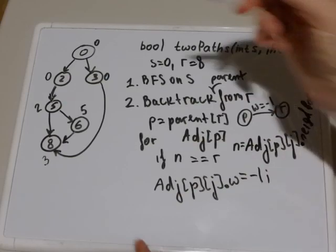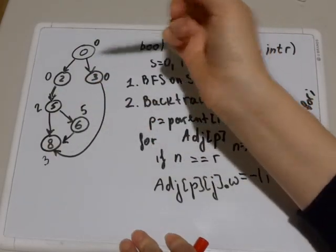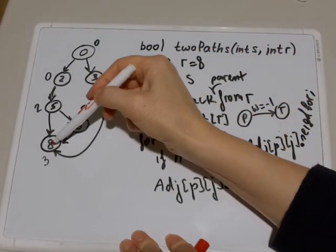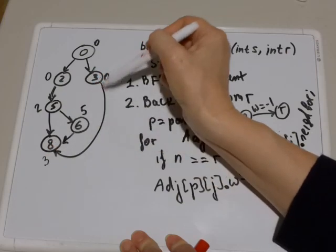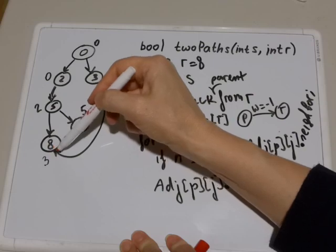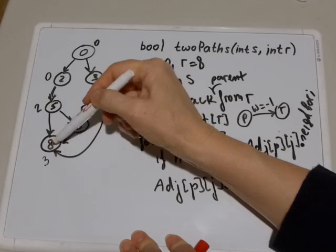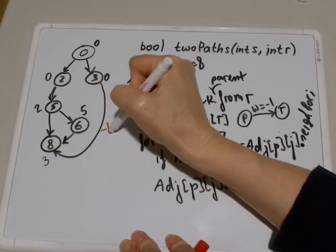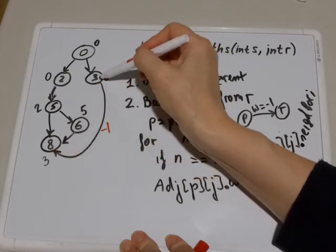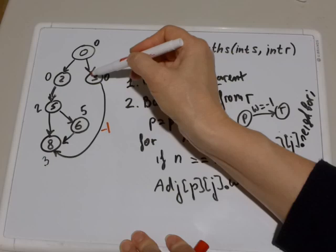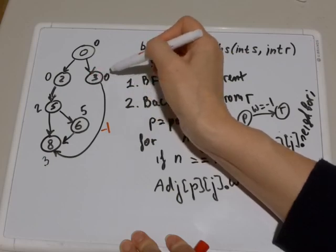On the picture it will look like this. When I run BFS I will set parents like this, and then I backtrack from 8. What is its parent? 3. So I backtrack. I will find adjacency 3, look through adjacency 3, find 8 as a neighbor, and set weight of this edge to negative 1. Then I call recursively on parent of this node, which is 3. In this node I look up the parent of this node. It's 0, it's not equal to 3.